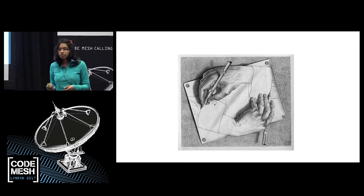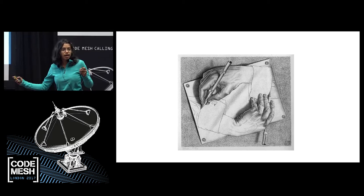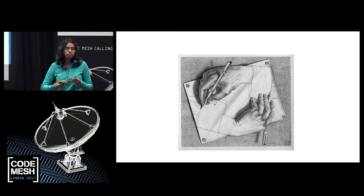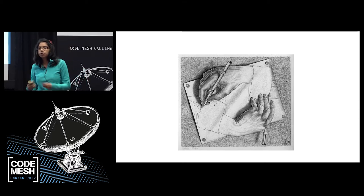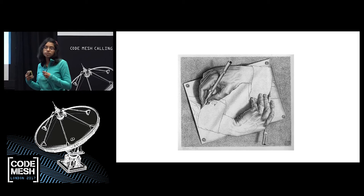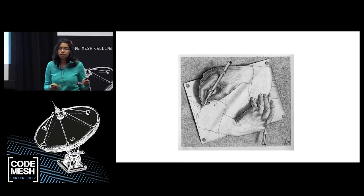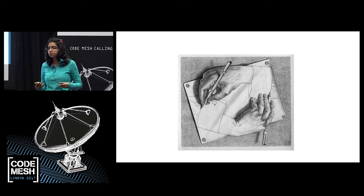For a long time, category theory has been a completely different discipline and hasn't really pervaded functional programming as much as it should have done. What I want to try and do in this talk is show you how we can use category theory to solve some problems which you might not think would be solvable, and how we can abstract over what we do by taking something from a different discipline.